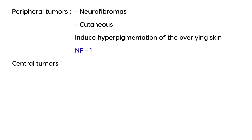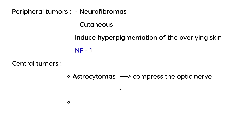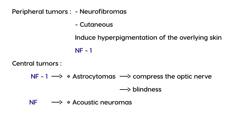There are two important central tumor types. The first is astrocytomas, which can compress the optic nerve and lead to blindness; this is commonly seen in neurofibromatosis type 1. The second is the acoustic neuroma, which is the primary manifestation of neurofibromatosis type 2. Acoustic neuromas can compress cranial nerve 8, causing deafness.